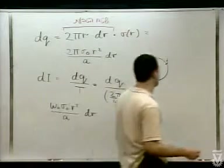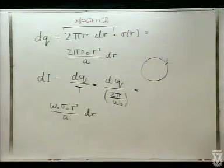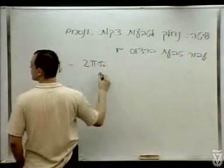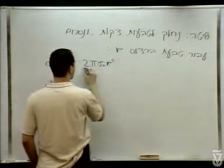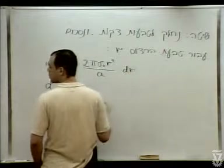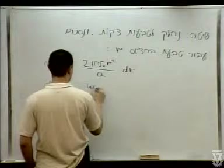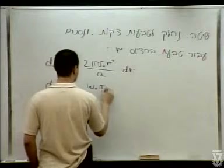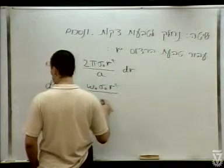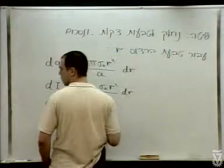אני ארשום כאן את הביטויים שקיבלנו: 2π סיגמה-אפס R², חלקי A, DR — וכאן: אומגה-אפס, סיגמה-אפס, R², חלקי A, DR.